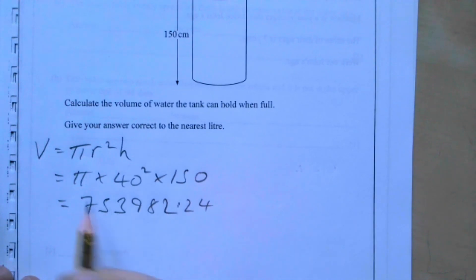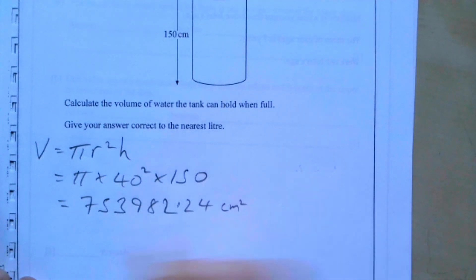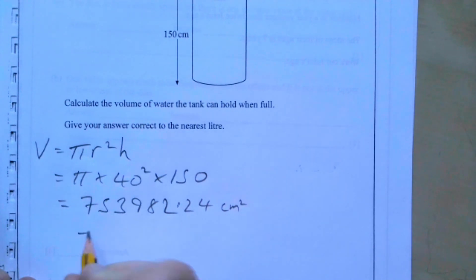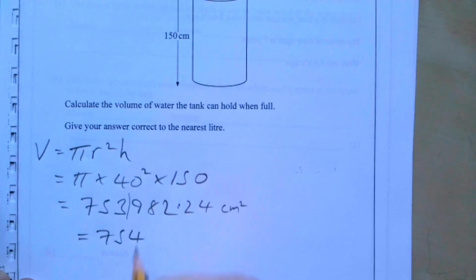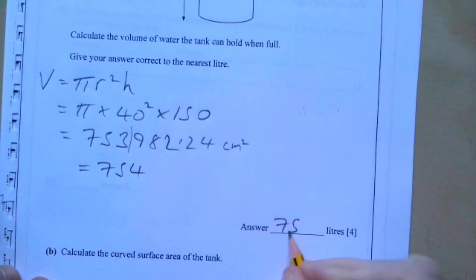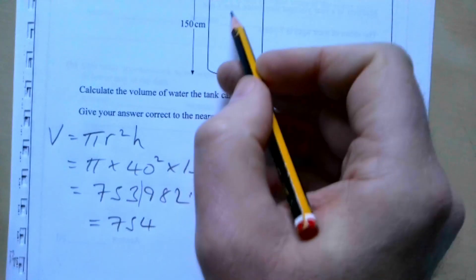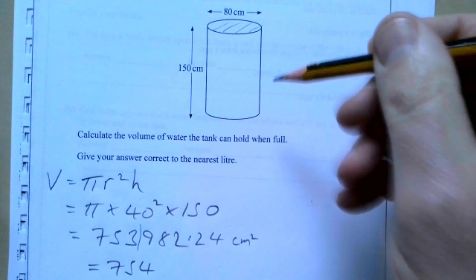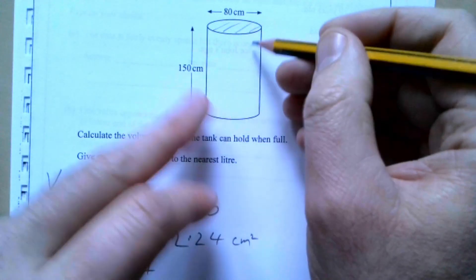In terms of litres, we divide by 1000, giving approximately 754 litres. For the curved surface area, if you unfold the cylinder it becomes a rectangle — 150 cm high and the circumference wide.